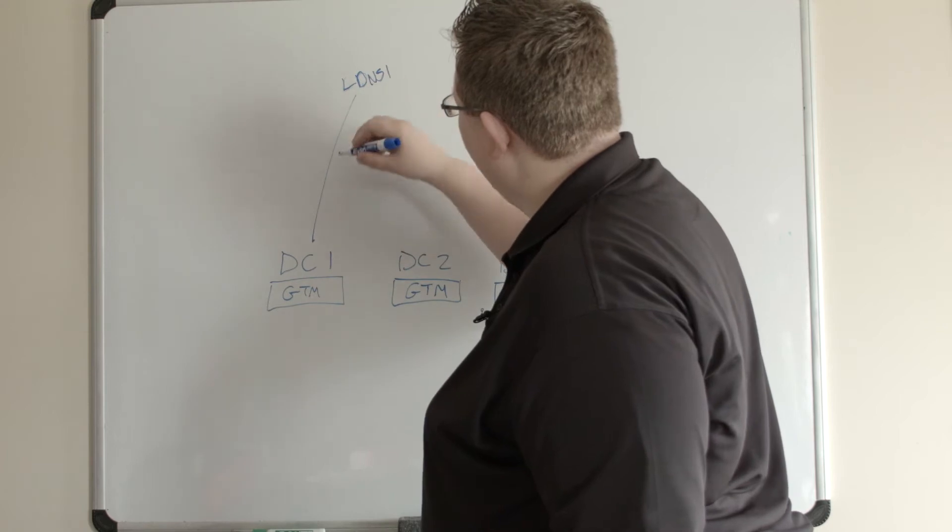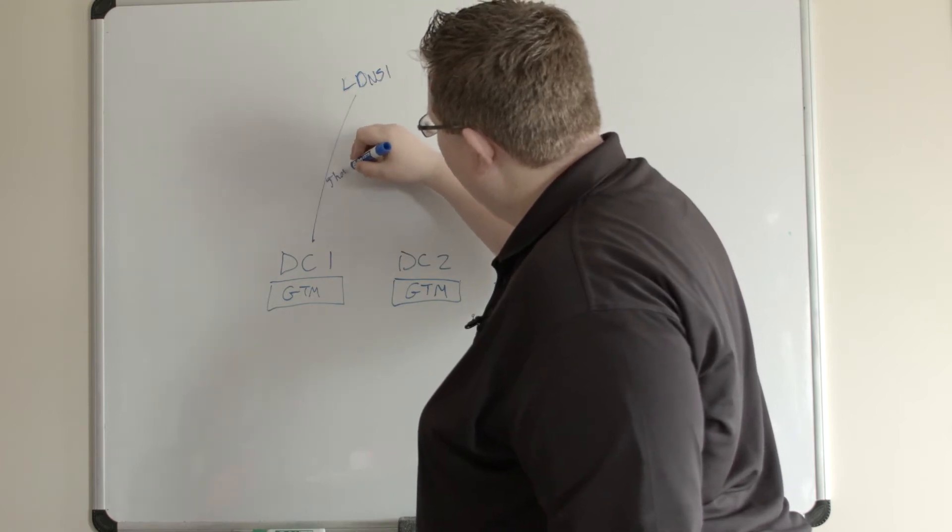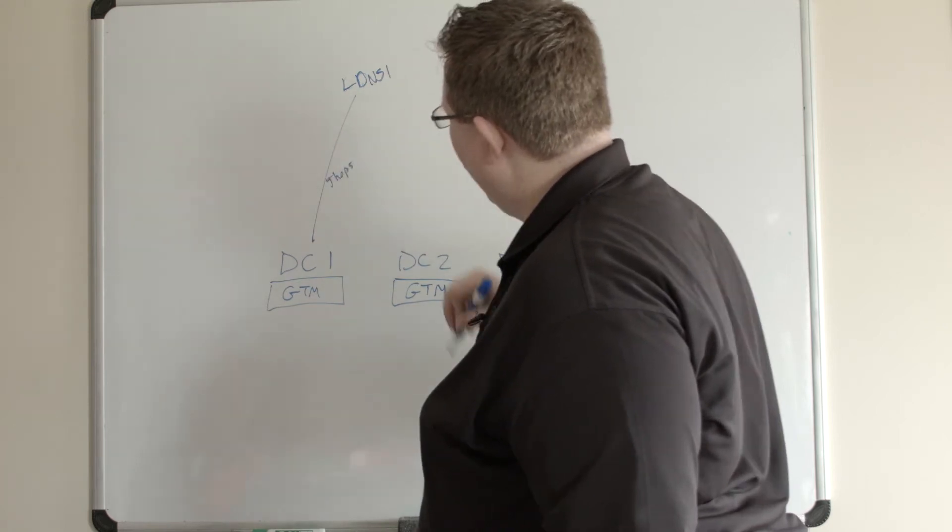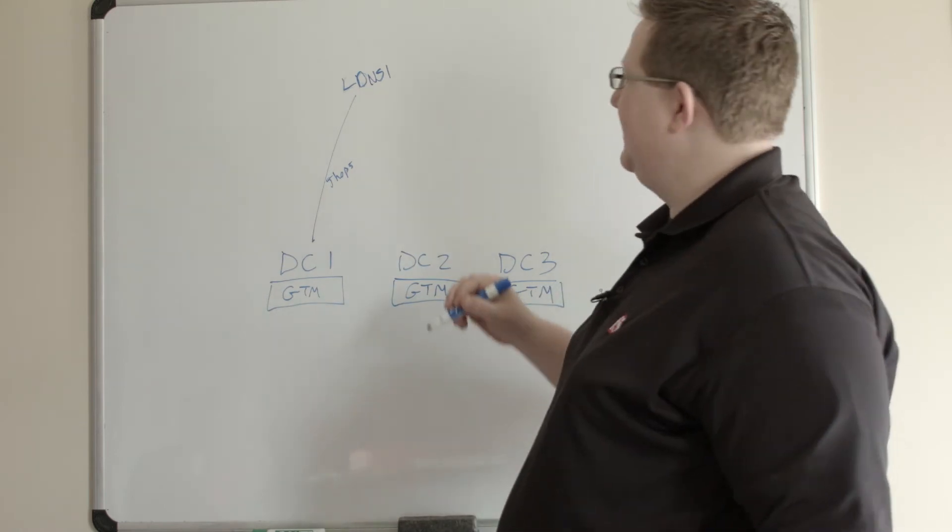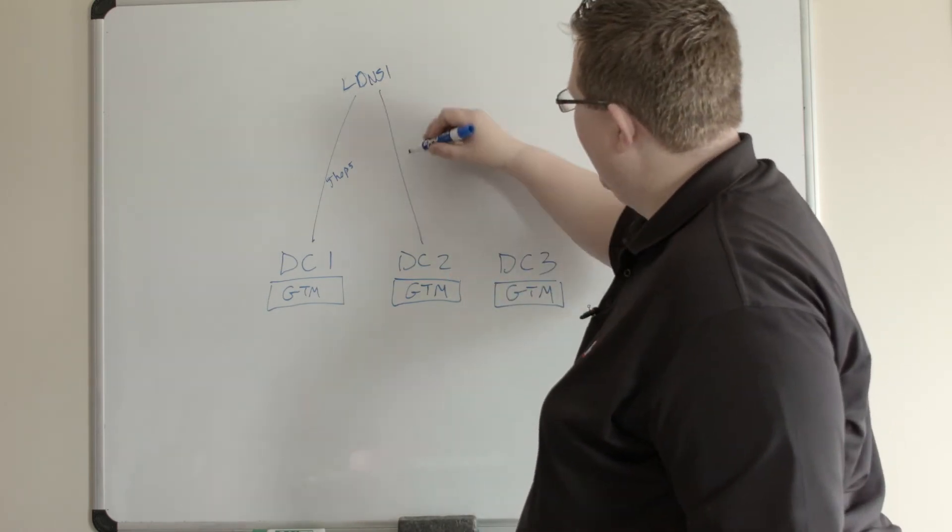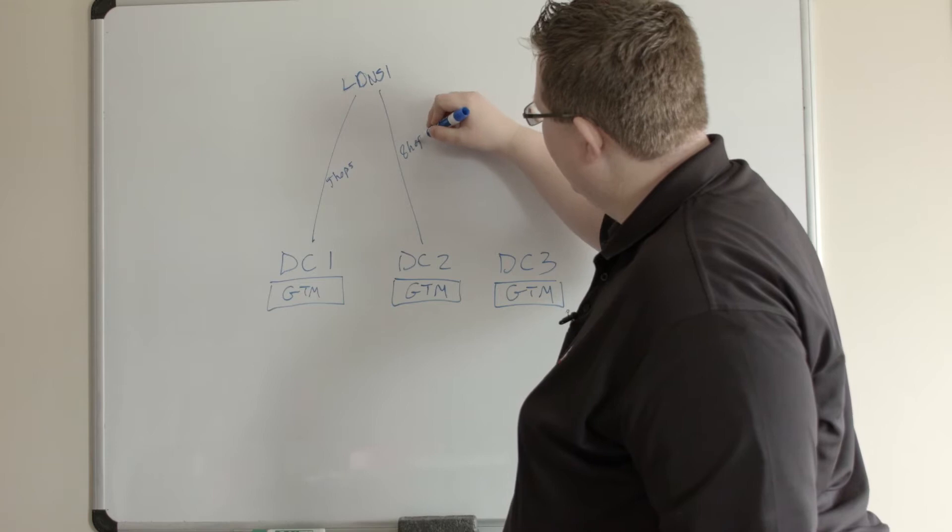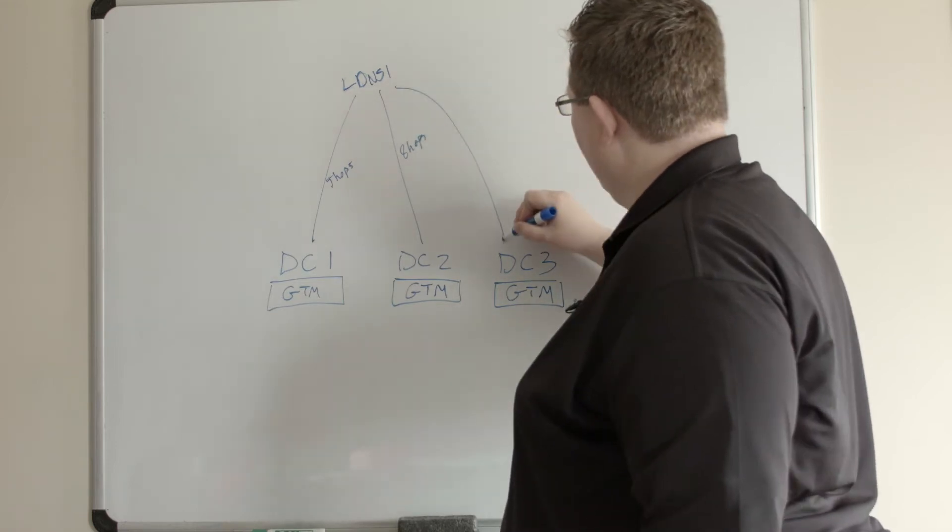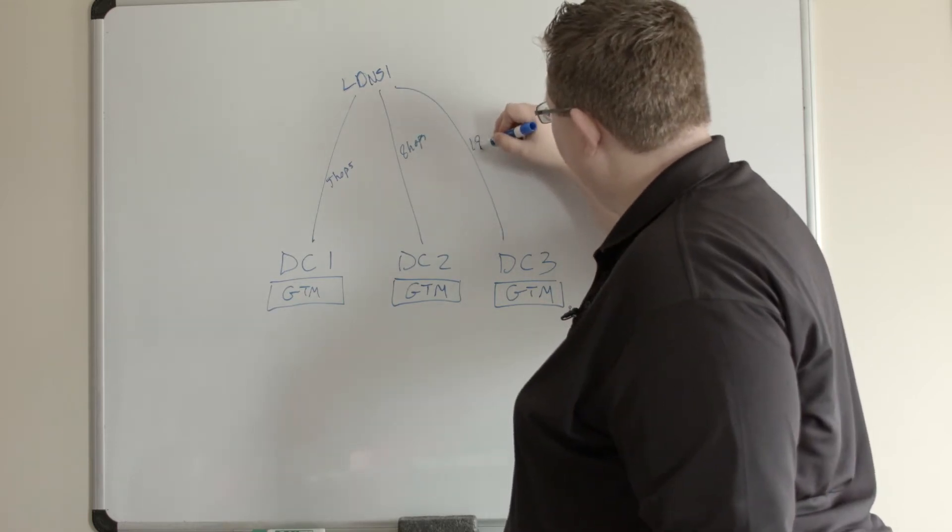Let's say, for example, my hops are five hops away to DC1 from this LDNS, and eight hops away, and say, 18 hops away.